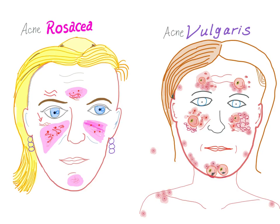Another crucial element: the complications of acne rosacea include conjunctivitis, conjunctival injections, and gritty sensations in the eye. Sometimes we have perioral dermatitis, and sometimes we have deformity of the nose, known as rhinophyma, which requires surgery because it's deforming. There are no such ocular or nasal complications in acne vulgaris.